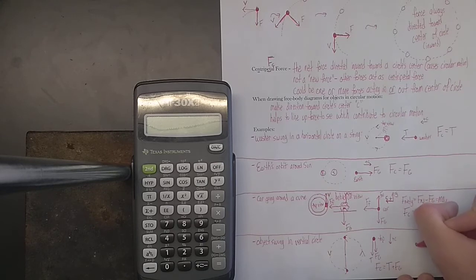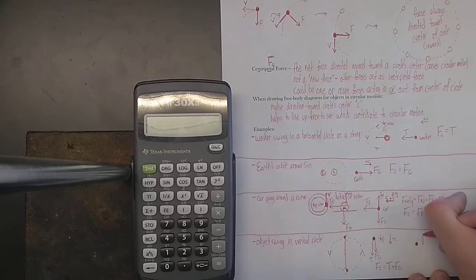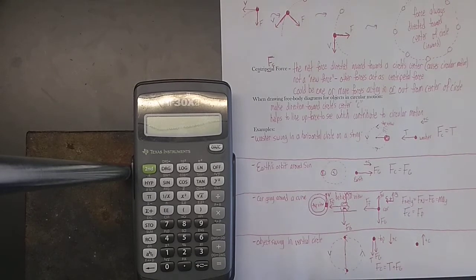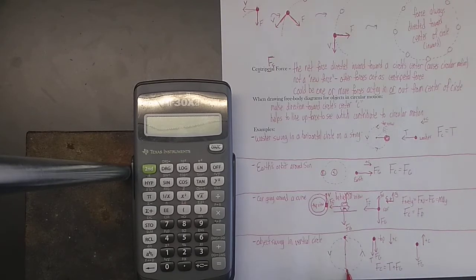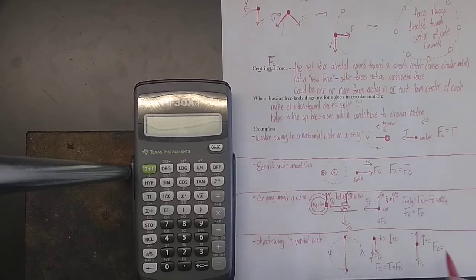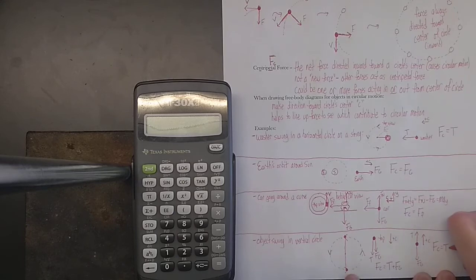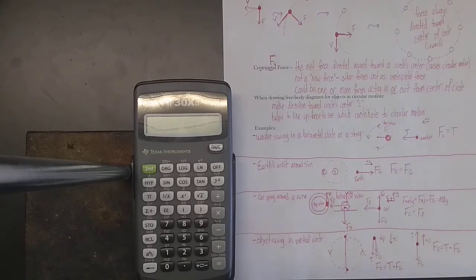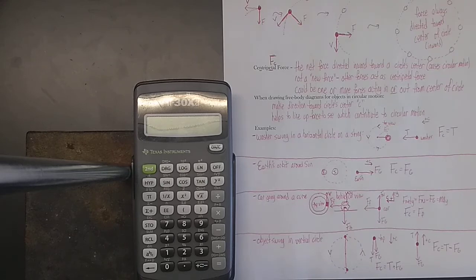What about when it's at the bottom? That's going to be a different case because the direction towards the center of the circle is now upwards. Notice that C doesn't have a fixed direction - it always just points towards the center of the circle. The force of gravity still points down. But this time, the string is pulling up on the object, so tension points up. Therefore we write: Fc equals T minus the force of gravity, because gravity points away from the center of the circle. The centripetal force doesn't have to be just one force - it can be a sum of forces, taking into account their directions.